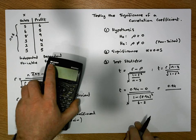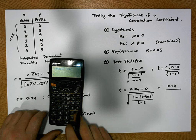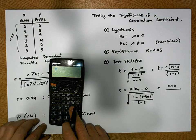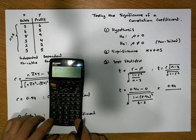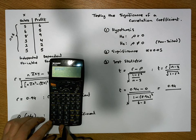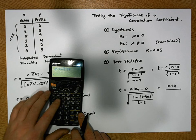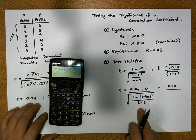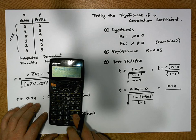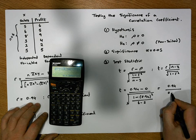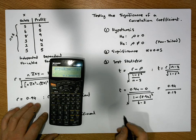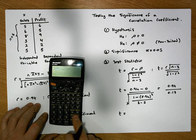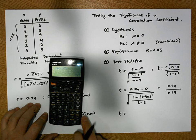Using the calculator, we compute the square root of (1 minus 0.94 squared), all divided by 4, which gives approximately 0.17. So our test statistic t equals 0.94 divided by 0.17.